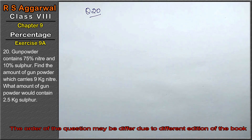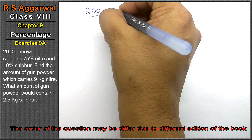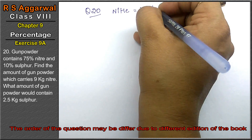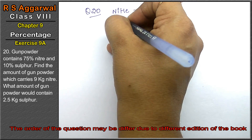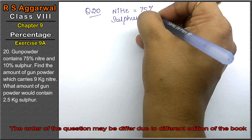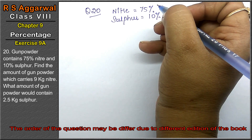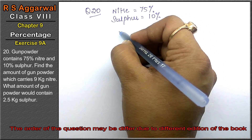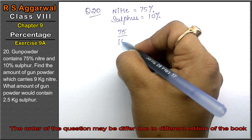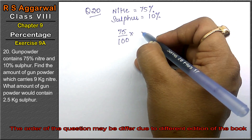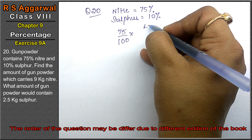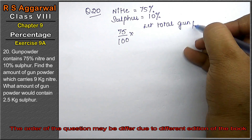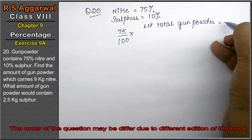Let's do question number 20 of exercise 9A, that is a percentage question. Question 20: gunpowder contains 75% nitrate and 10% sulfur. Find the amount of gunpowder which carries 9 kg of nitrate. Friends, 75% of total gunpowder is nitrate, so let total gunpowder equal x.